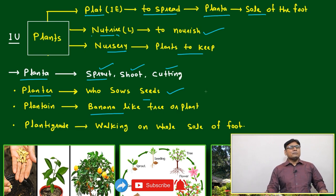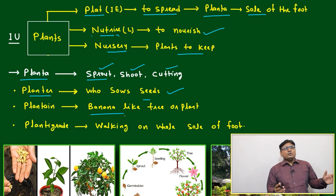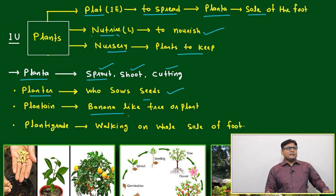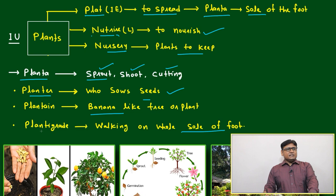Plantain refers to a banana-like tree or plant — mainly banana. Any tree that looks like a banana can be called a plantain tree. 'Plantigrade' means walking on the whole sole of the foot — that is called plantigrade.